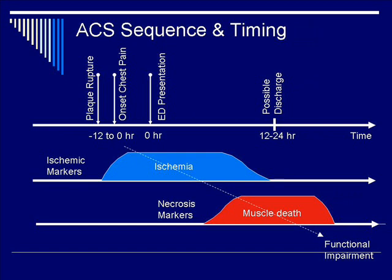This is a pictorial of the natural history of ACS. You start with plaque rupture and associated chest pain symptoms, followed by ischemia, which is the lack of perfusion. It is at this point that the patient presents to the ED. With persistent ischemia, you have necrosis and muscle death.